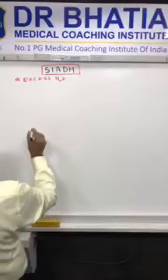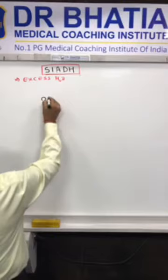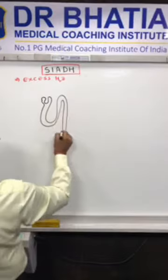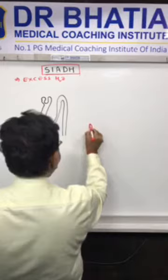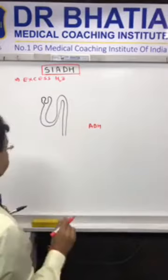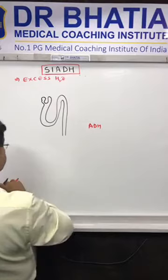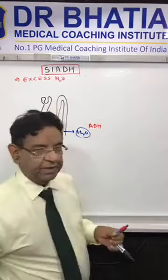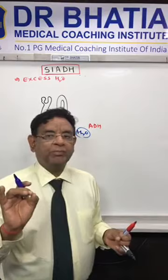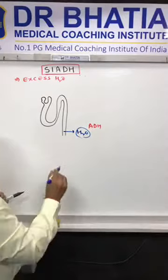Now for the basic mechanism, we look at the nephron. ADH comes from the posterior pituitary and acts on the DCT and the collecting tubule, where it reabsorbs only water. An important point to note: ADH has no role in sodium, potassium, or any other electrolyte — it simply reabsorbs water.